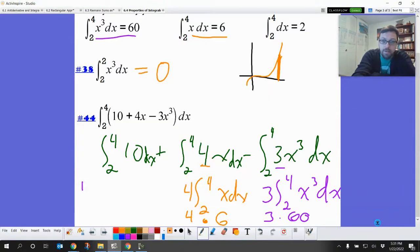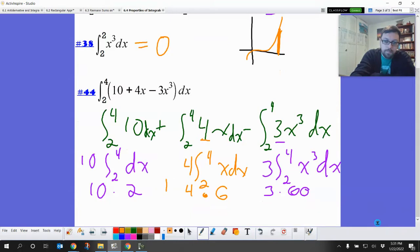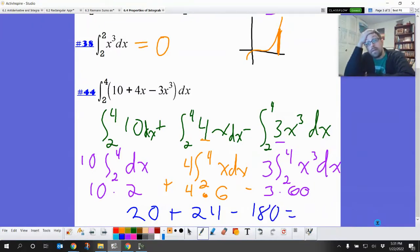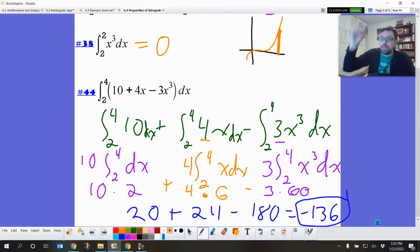Next, this one has got a 10. You can take that 10 out. So that's the integral from 2 to 4 of dx. Well, somebody told me that. It's 2. So this is just 10 times 2. So add them up, subtract the thingies. This is 20 plus 4 times 6 is 24 minus 180. So that's 180 minus 44 is negative 136. Hopefully. If I got that wrong, you all can fix it.